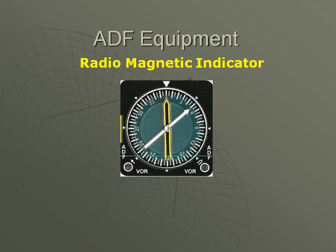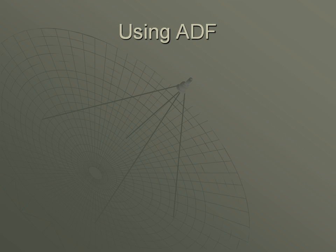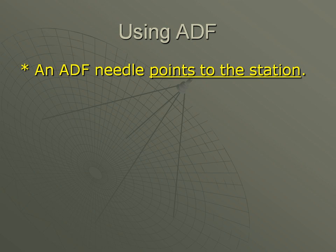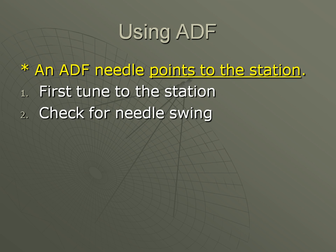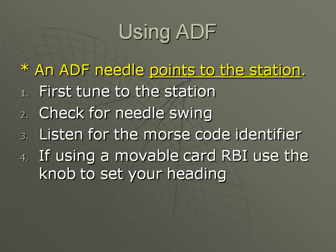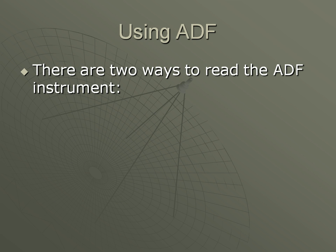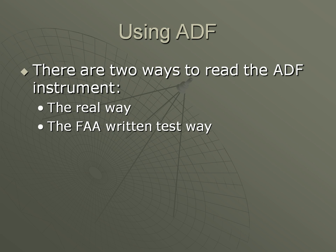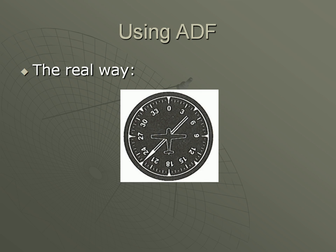The key to using any kind of ADF is the simple principle that once tuned and identified, the needle will point to the station. Just like a radio, you look up the frequency of the station you want and turn the dial. With the right frequency, you should see the needle swing toward the station. Turn up the volume and make sure that you're listening to the correct station. And remember, if you have a manual movable card RBI, to set the heading. Now we can read the bearing from the instrument. There are two ways to read an ADF.